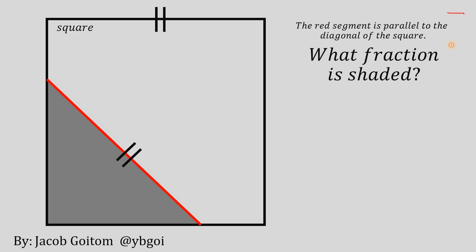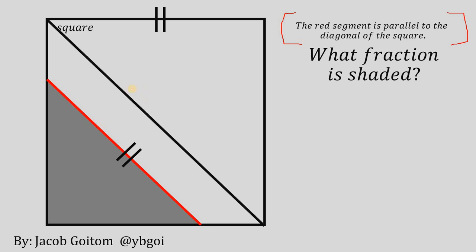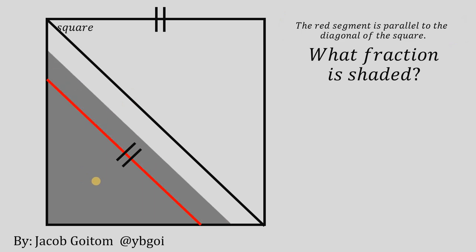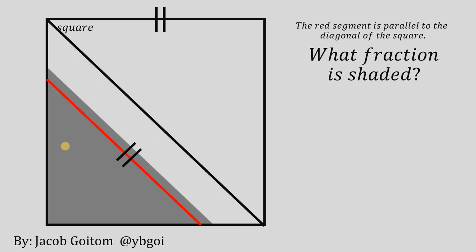The given condition says that the red segment is parallel to one of the diagonals of the square. So why not draw the diagonal of the square? We know that the diagonal of the square and the red segment are parallel to each other. Notice that we have 2 similar triangles — the first is a small right triangle, and the other is the large right triangle, or simply half of the square. Since they are similar, the angle here is also 45 degrees.